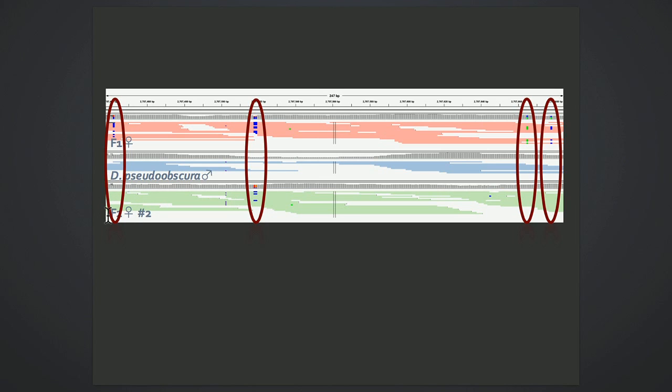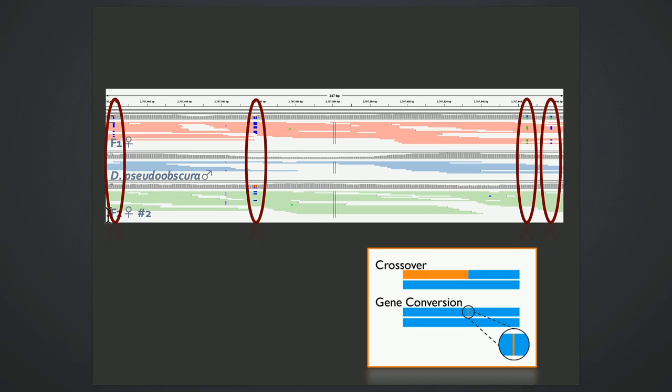And this is that signature of gene conversion that I was describing, where we see a shift from homozygosity to heterozygosity and back to homozygosity. And these flanking SNPs can also be used to tell us about the maximum possible tract length of this gene conversion event, which is important for extrapolating gene conversion rates from this data.